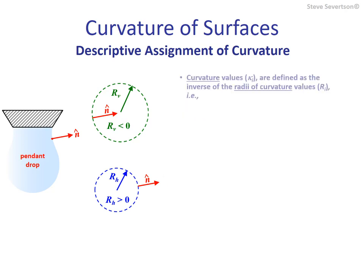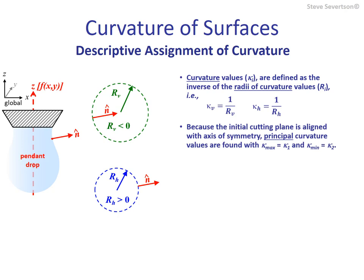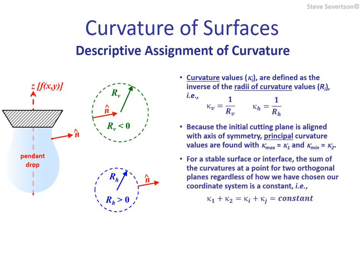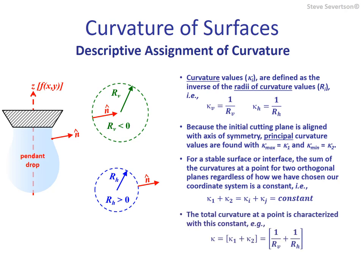Curvature values measure how sharply a surface is curved and are defined simply as the inverses of the radius of curvature values. The curvatures found here are the principal values — the maximum and minimum values for point P — because the initial cutting plane is aligned with the axis of symmetry. It is common practice to assign one to the maximum principal curvature value and two to the minimum. The nice thing about gauging curvatures using orthogonal planes is that the sum of these values is an invariant: as long as the planes are perpendicular to the tangent plane and include the normal, their sum is a constant. The kappa value in the Young-Laplace equation is actually the sum of the curvature values for two orthogonal cutting planes — this value is sometimes referred to as the total curvature.